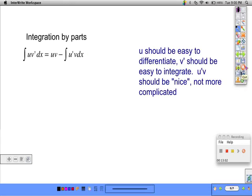Now, for integration by parts: if we have the integral of u times the derivative of v dx, that's equal to u times v minus the integral of u prime v dx. When we're deciding what u and v prime should be, we need to consider which piece would be easy to differentiate and which piece would be easy to integrate. And when we look at building this new integral, u prime v, that should be nicer than the original integral we had, not more complicated.